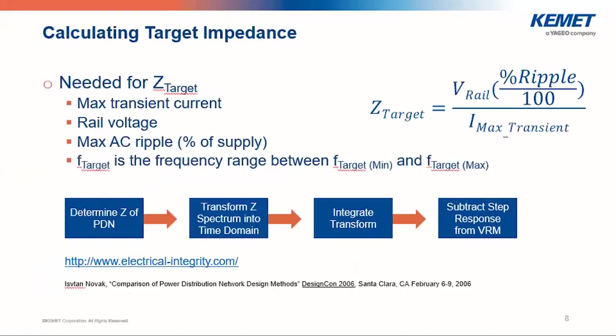A very important factor is impedance. We need our impedance to be on the same level or lower than the impedance of the target IC, so that our PDN can be decoupled efficiently. We calculate our target impedance using a variation of Ohm's law: Z_target equals the voltage rail times the percent ripple divided by 100, divided by the maximum transient current. We then transform that into the time domain, integrate it, and subtract the step response from the VRM to get our target impedance.